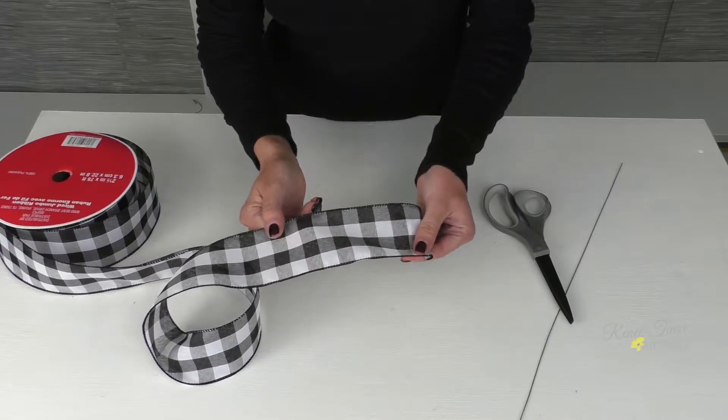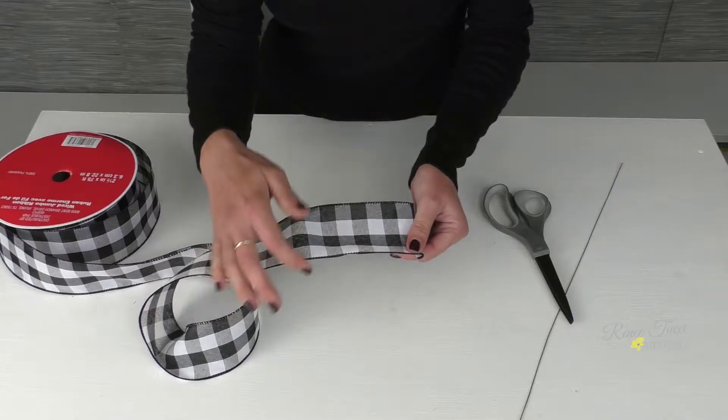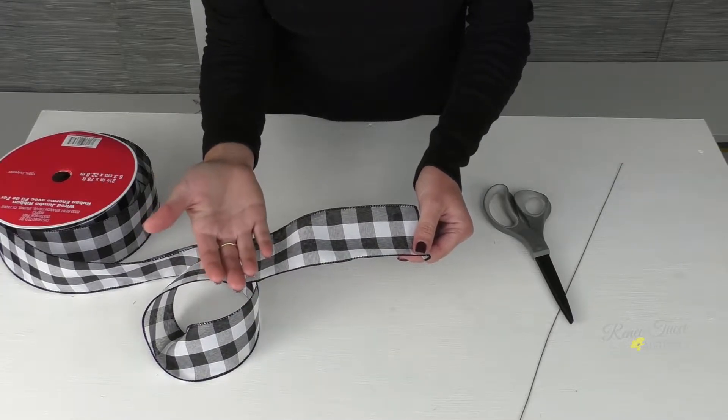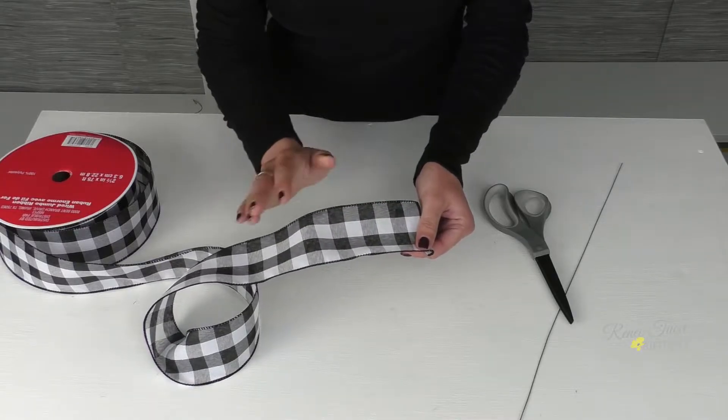Now, the ribbon that we're working with today is wired. That means there's a wire running on each side of the ribbon. You can certainly make a bow with non-wired ribbon as well, but this will help you hold a really good shape on all of your loops.